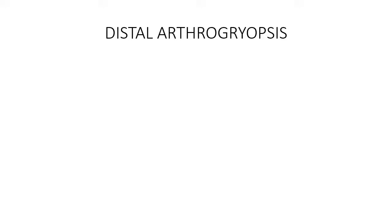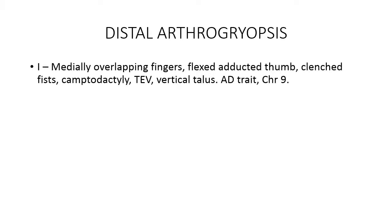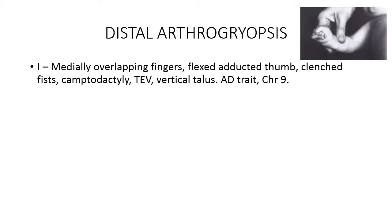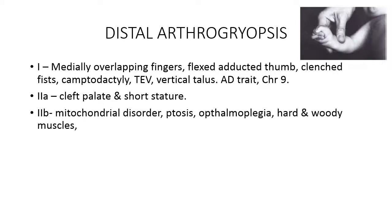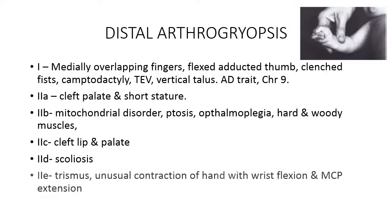Distal AMC has six types. Type 1 has a medially overlapping finger and a flexed adducted thumb — thumb-in-palm deformity — with a clenched fist contracture, called the mitten hand, along with talipes equinovarus or vertical talus deformity. It is inherited as an autosomal dominant trait and the gene has been mapped to chromosome 9. Type 2 has five subtypes: Type 2a is characterized by cleft palate and short stature; Type 2b by a mitochondrial disorder with ptosis, ophthalmoplegia and hard, woody muscles; Type 2c has cleft lip and palate; Type 2d has scoliosis; and Type 2e has trismus.